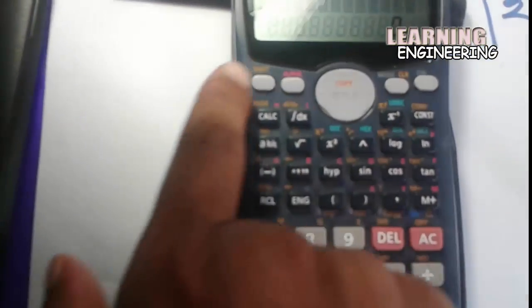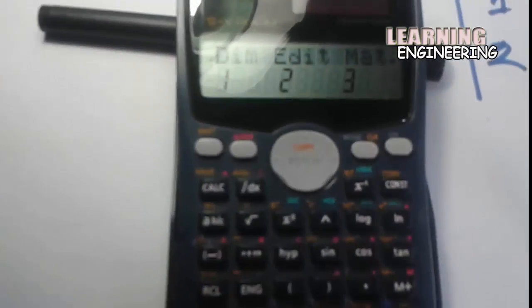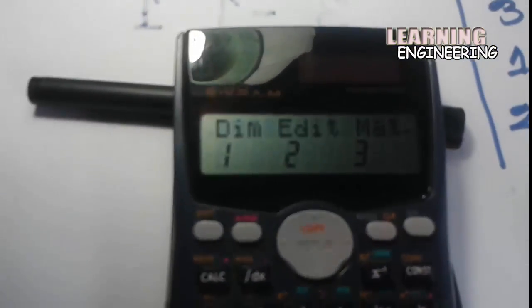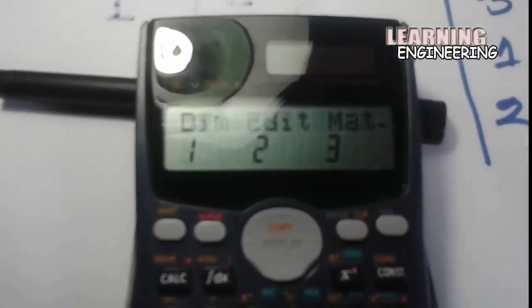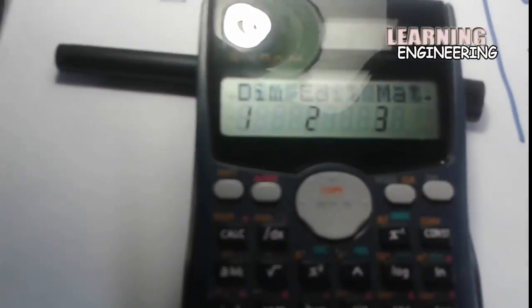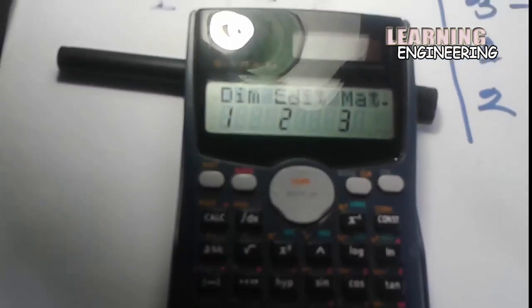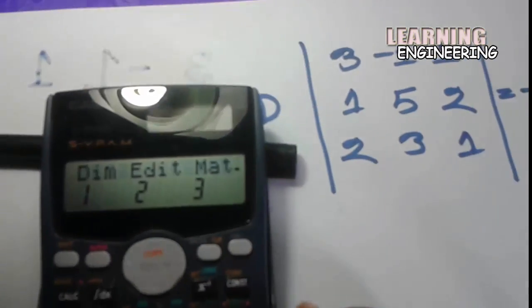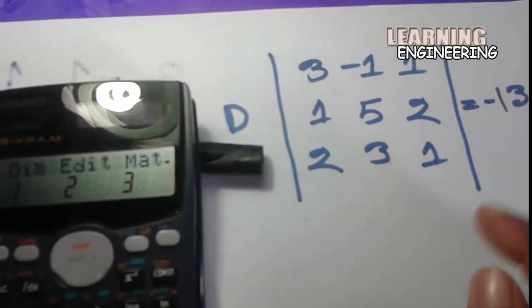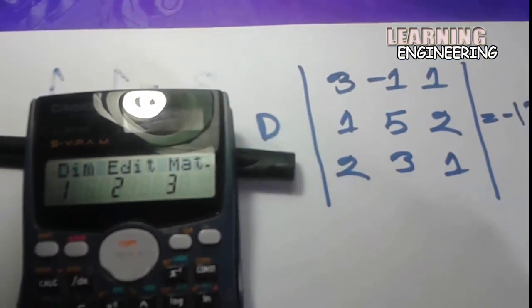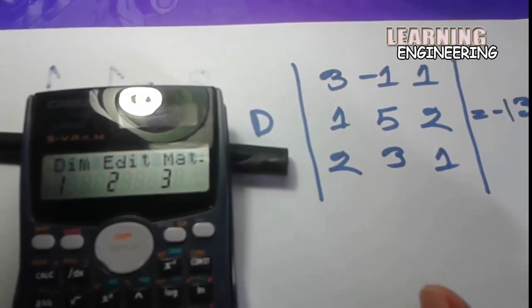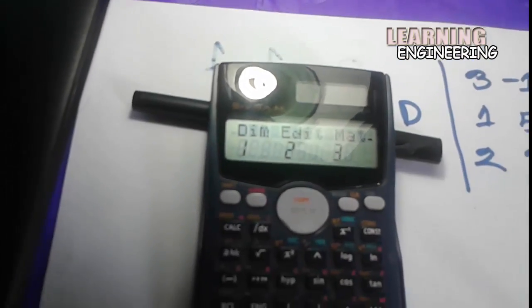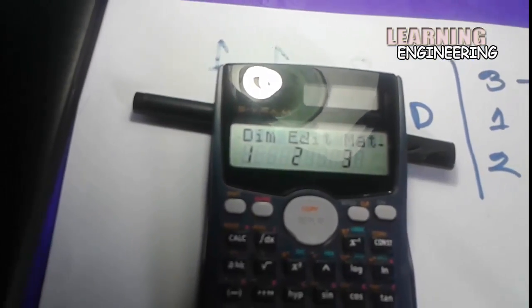Then press Shift and 4. This opens the matrix function menu: dim, dimension, edit, match, etc. First is matrix dimension. Here I have a three-column and three-row matrix. For matrix dimension, press one.